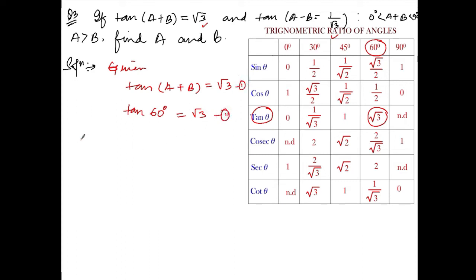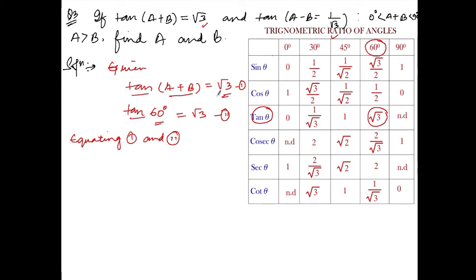And this is equation number 2. Equating equations 1 and 2 — since tan are the same and √3 = √3 — a+b is also equal to 60°. So a+b = 60°.